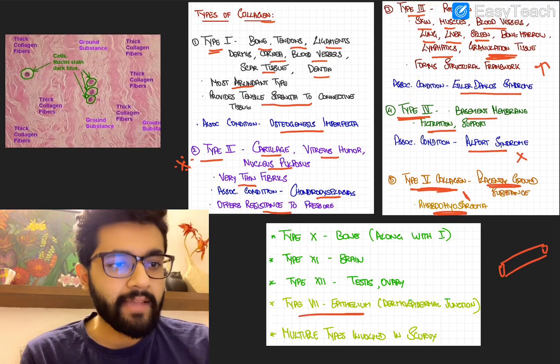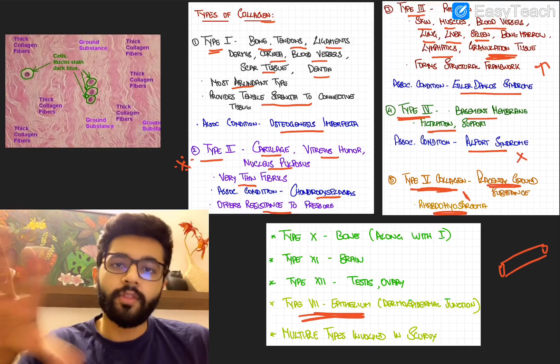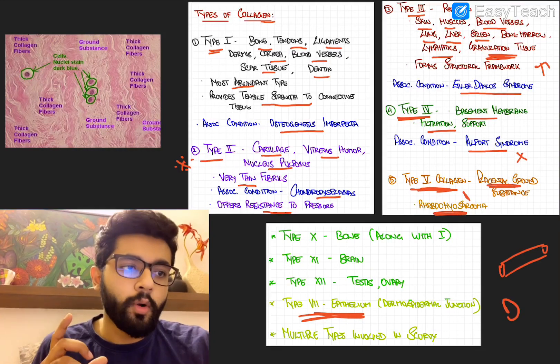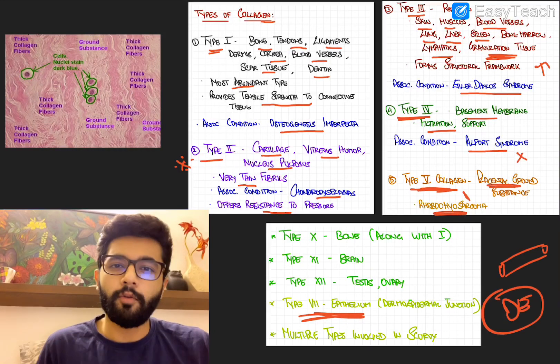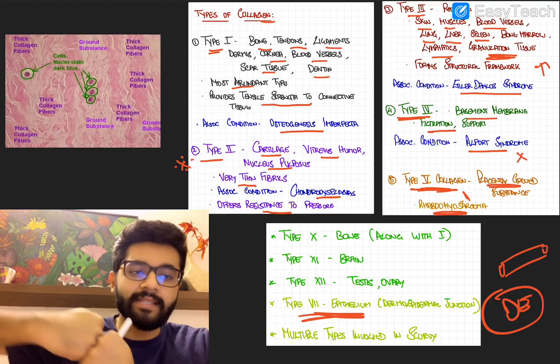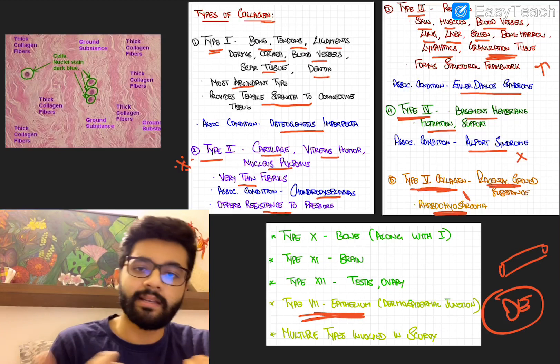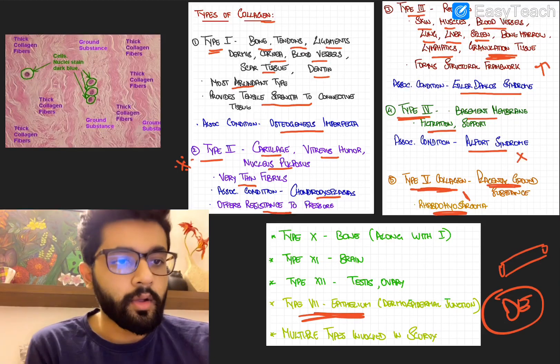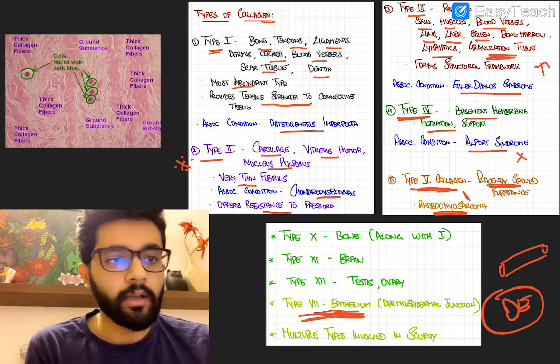Type 7 collagen, very important. It's found in the epithelium or the skin but at the dermoepidermal junction. So type 7 collagen gives stability at the dermoepidermal junction or binds the dermoepidermal junction, the basal layer and the epidermis. So that's type 7 at the dermoepidermal junction.